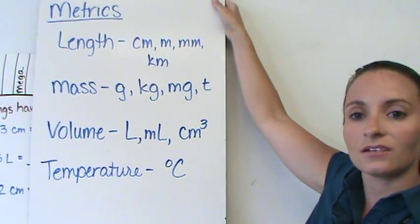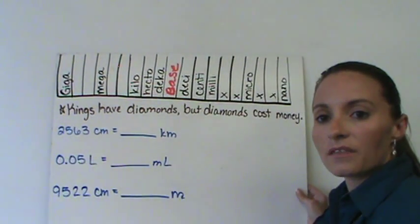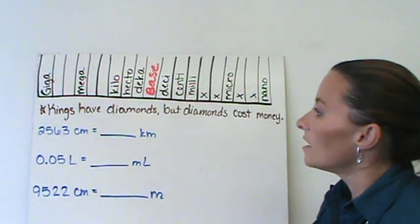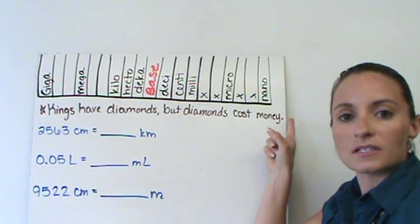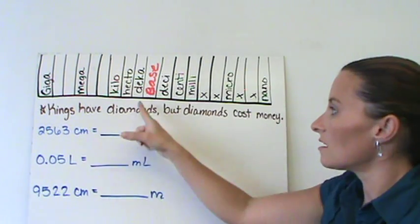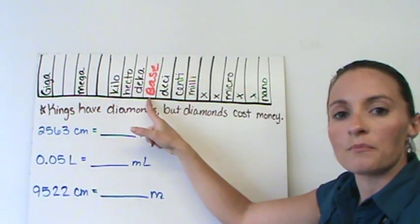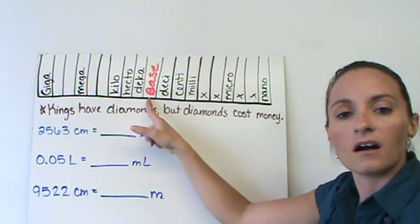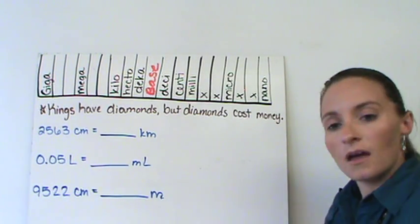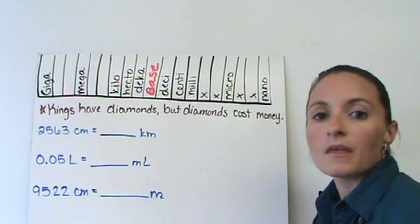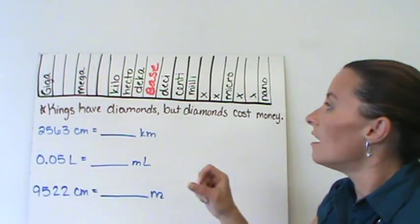Let's take a look at all the major pieces of the metric system with measurement. Here we have a line across the top that deals with the metric measurements. In the middle here in red, I have what's called base. Base is going to be your base measurement of length, which would be the meter, volume which would be the liter, mass which would be the gram. We're going to keep this as our base.